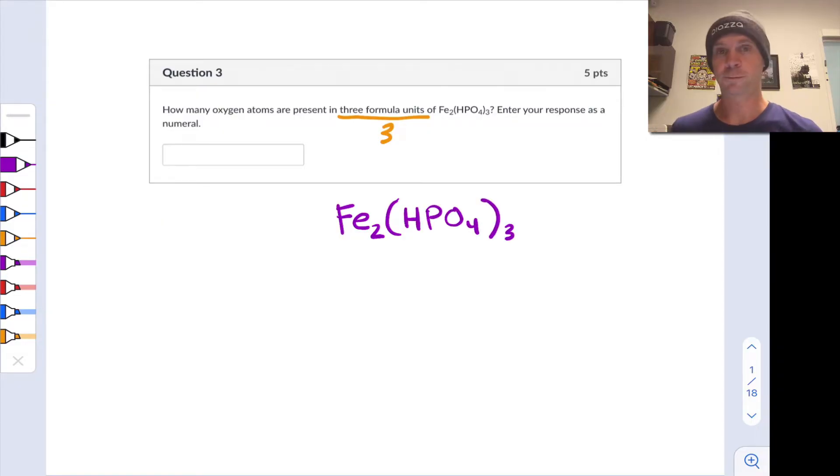Fe2(HPO4)3 is that formula. First let's take a look at a single formula unit of this ionic compound. We've got HPO4 2- anions in there, and the number of oxygen atoms within each of those anions is 4, and there are three of those anions per formula unit, so what we have in each formula unit is 12 oxygens.